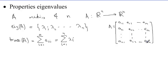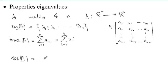The trace, obtained by adding the principal diagonal elements, can equivalently be found by summing the eigenvalues. Additionally, the determinant of matrix A — which we know how to calculate directly — can also be shown to equal the product of all the eigenvalues of A: det(A) = Π λᵢ for i = 1 to n.